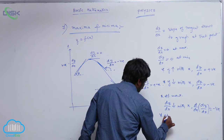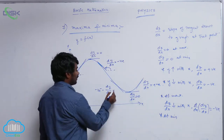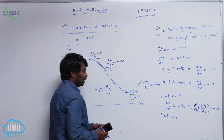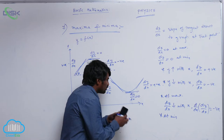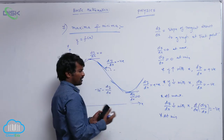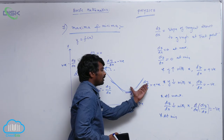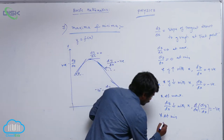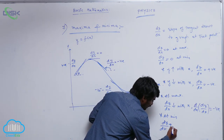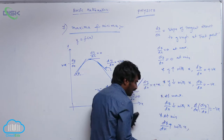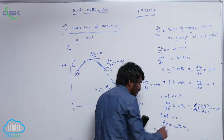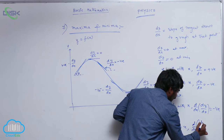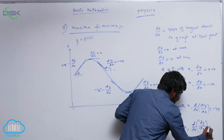At minima, dy by dx is first negative, then 0, then positive — going from negative to 0 to positive. Just before and just after the minima point, you can observe this. That means dy by dx is increasing with x. So the differentiation of dy by dx with respect to x is positive, meaning d²y by dx² is greater than 0.